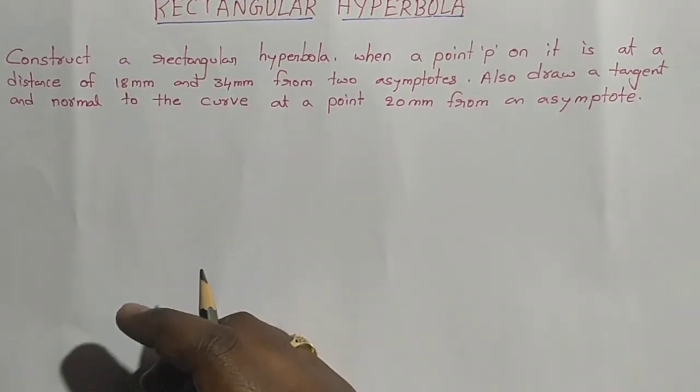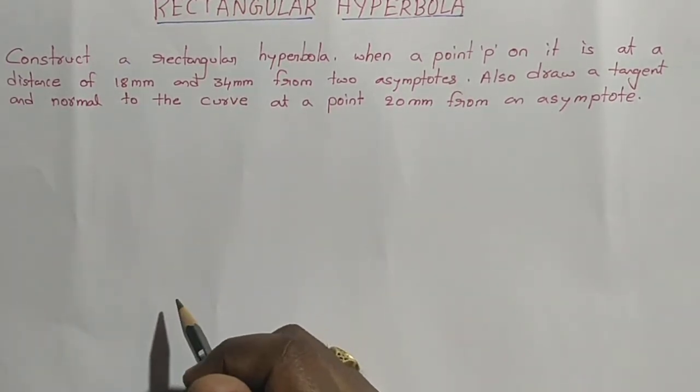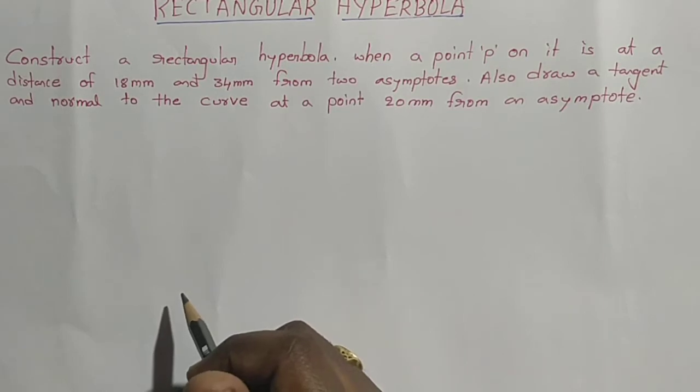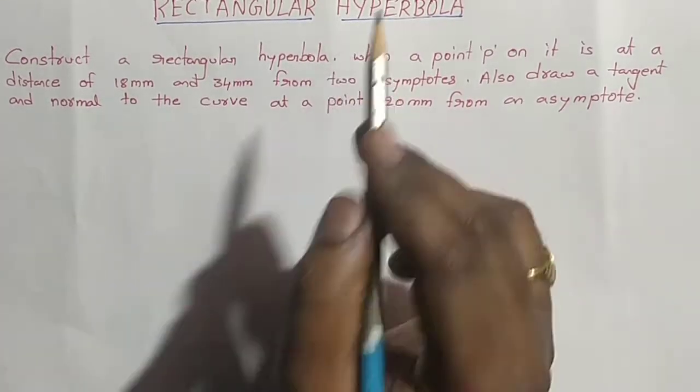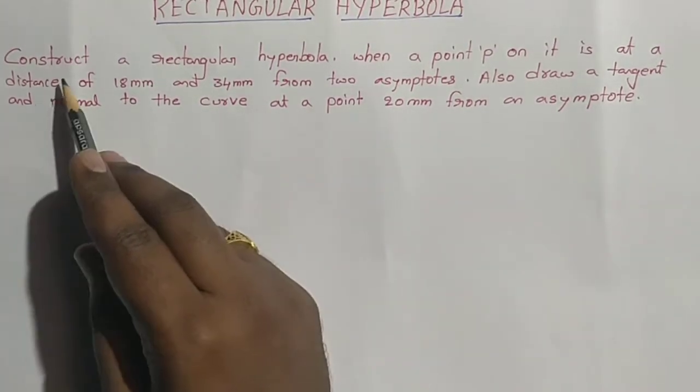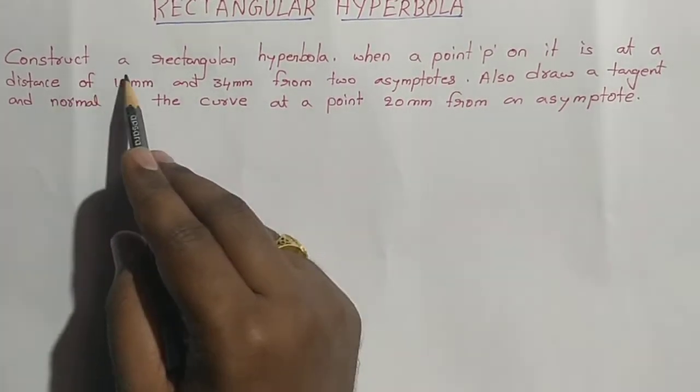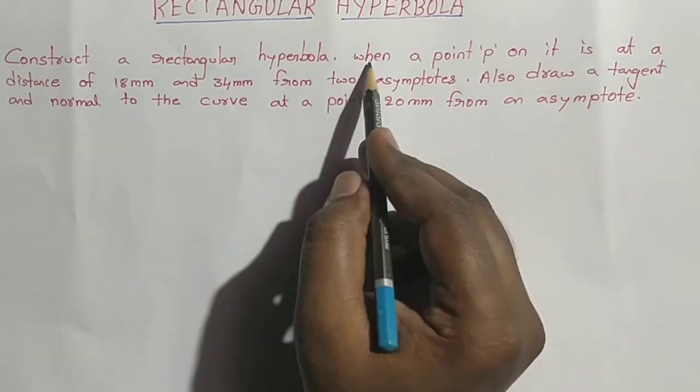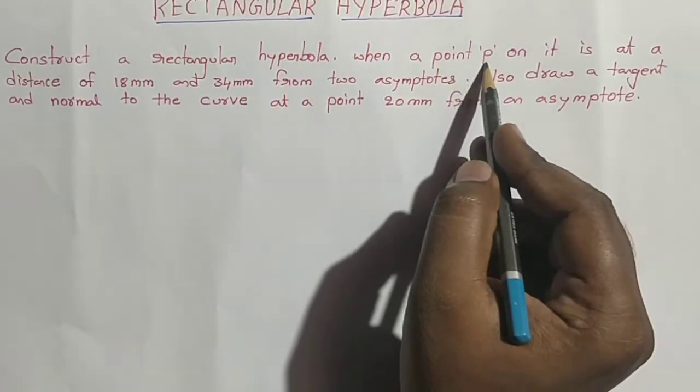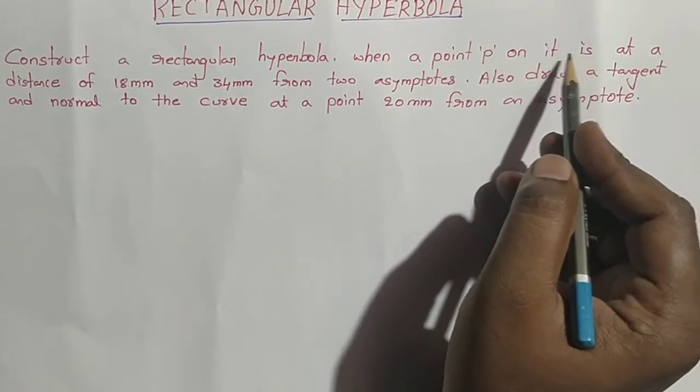Hi, good morning. My name is Raman Janelu. Today I am going to explain construction of rectangular hyperbola. The problem given is: construct a rectangular hyperbola when a point P on it is at a distance of 18mm and 34mm from two asymptotes.